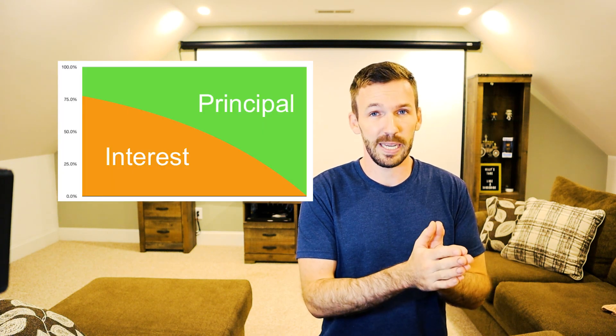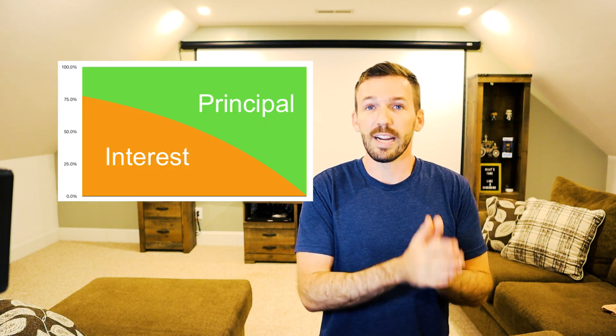What is the difference between principal and interest? Principal is the amount that is actually borrowed from the lender. Interest is the fee that you pay for borrowing that principal. At the beginning of a 30-year term, your principal payments are very tiny and your interest payments are very large. However, your monthly payment stays the same throughout that 30-year term.